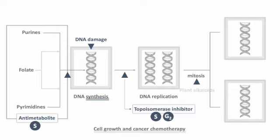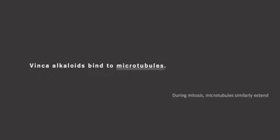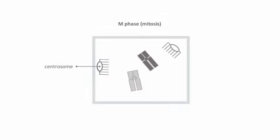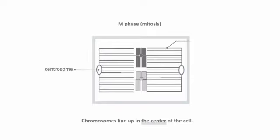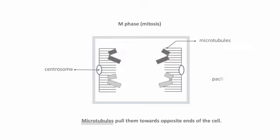Plant alkaloids, like vinca alkaloids, step in and block cell division during the M phase, a critical part of cell division. Vinca alkaloids interact with microtubules — crucial structures responsible for organizing and segregating chromosomes during cell division. Plant alkaloids disrupt the microtubule function, thereby impeding the precise separation of chromosomes.